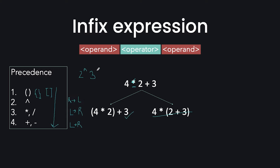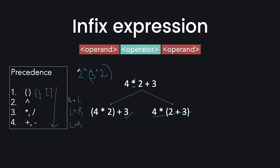But the exponential sign has right-to-left associativity. If I have written 2 raised to power 3, raised to power 2, I will start to evaluate from the right. This means I will first evaluate 3 raised to power 2, which is 9, and then evaluate 2 raised to power 9. That is the correct answer — not that I will first do 2 raised to power 3 and then raise to power 2. So this is precedence and associativity.